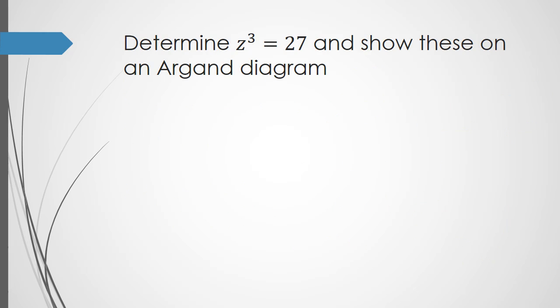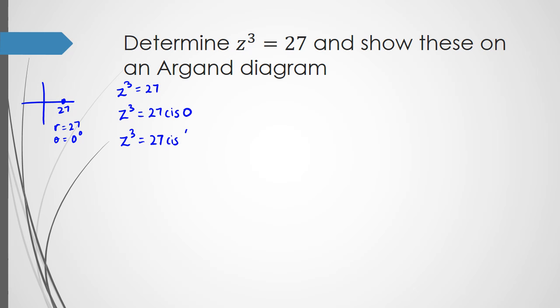Let's do an example. We have z cubed equals 27. Plotting 27, it sits on the real axis, so the modulus r is 27 and the argument θ is 0 degrees. So I write z cubed as 27 cis 0. That's step one. Step two in the long method is writing it as z cubed equals 27 cis(0 + 360k), working in degrees.